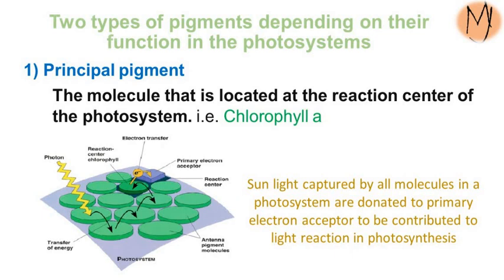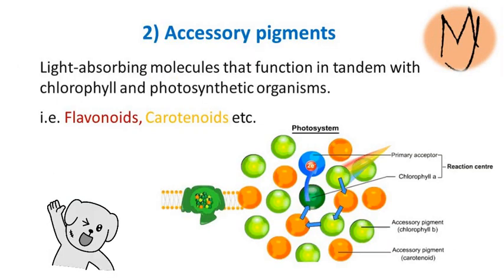Depending on functions during light absorption, there are two main types of pigments. The principal pigment is the molecule located at the reaction center of the photosystem, which is a chlorophyll molecule — recall the P680 and P700 reaction centers in the light reaction. Sunlight captured by other molecules in a photosystem is donated to the primary electron acceptor to contribute to the light reaction in photosynthesis. Accessory pigments are the second category — light-absorbing molecules that function in tandem with chlorophyll in photosynthetic organisms, such as flavonoids and carotenoids.